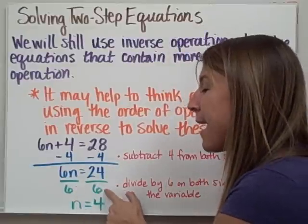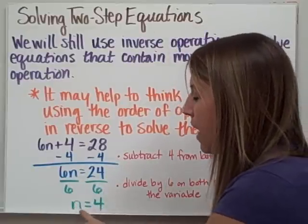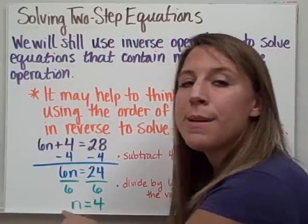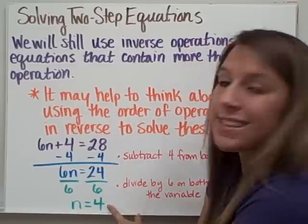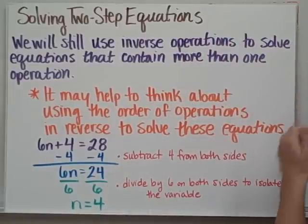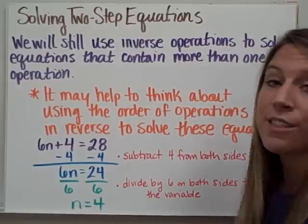So I divide both sides by 6, leaving me with n equals 4, because 6 divided by 6 is 1, and 24 divided by 6 is 4. I divided by 6 on both sides, and I did, in fact, isolate the variable.